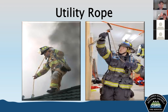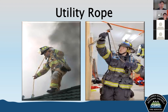Utility rope is the other type of rope. While NFPA doesn't regulate utility rope, it should be inspected regularly. Uses include hoisting equipment, securing unstable objects, and cordoning off areas. There are standards addressing the properties, care, and use, but they're not regulated by NFPA. We should still be inspecting our utility rope regularly because we use it to haul heavy tools — if it fails, it could cause injury.